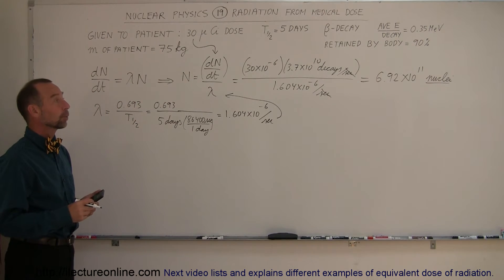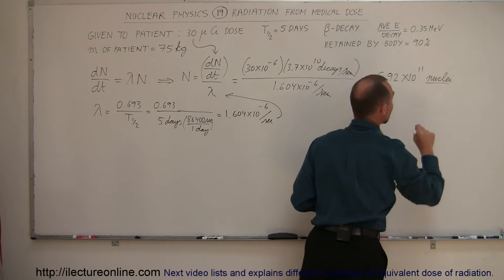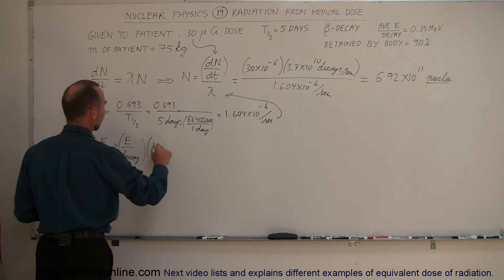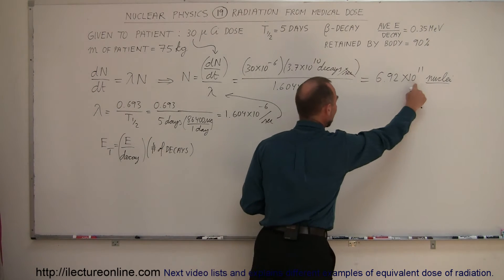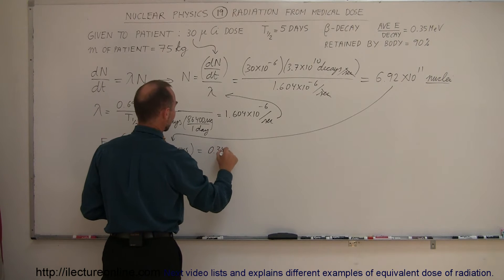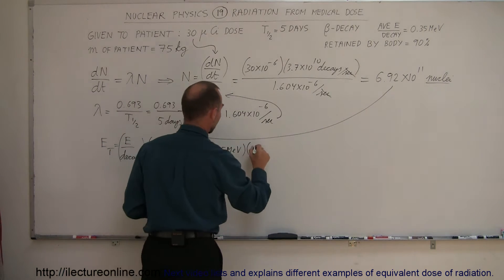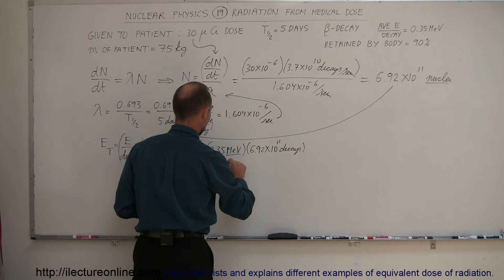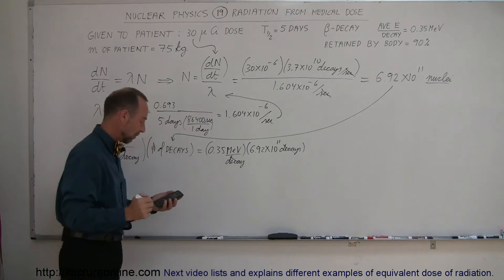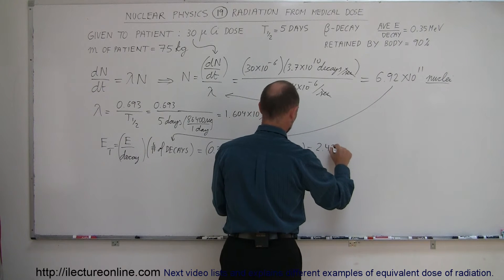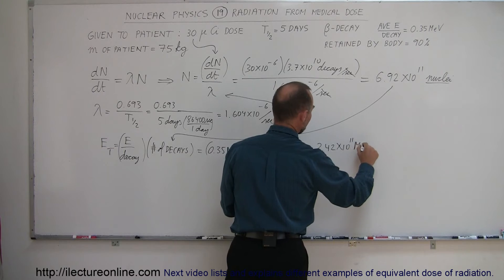So how much energy will you receive from that? Well, since each decay will give you 0.35 million electron volts of energy, then the energy total would simply be the energy per decay times the number of decays. Since we have the total number of nuclei that are going to decay, we can plug that number in here. So this is going to be 0.35 MeV, which is the energy per decay, times the total number of decays, which is 6.92 times 10 to the 11th decays.